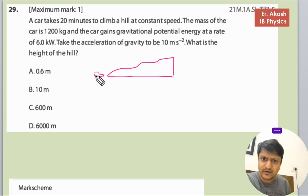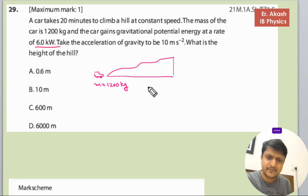The car has mass equals to 1200 kg. The car gains gravitational potential energy at the rate of 6 kilowatts. The potential energy rate means...